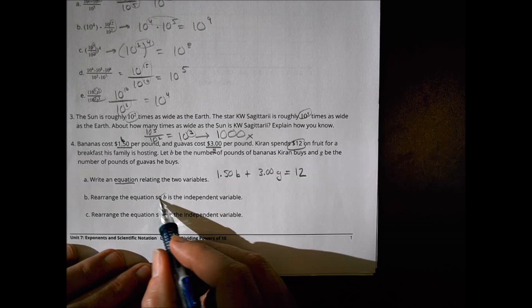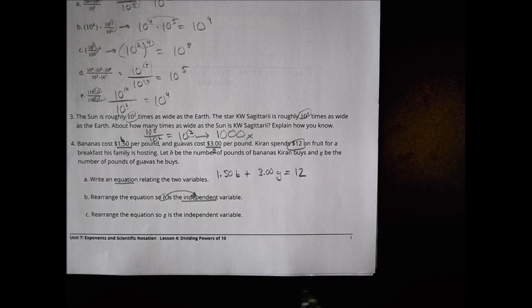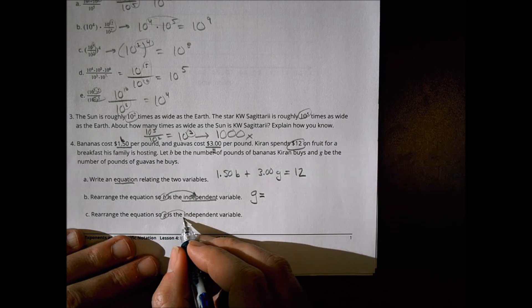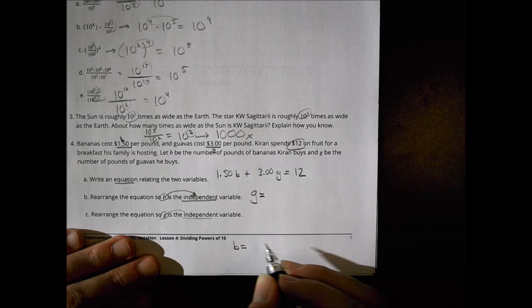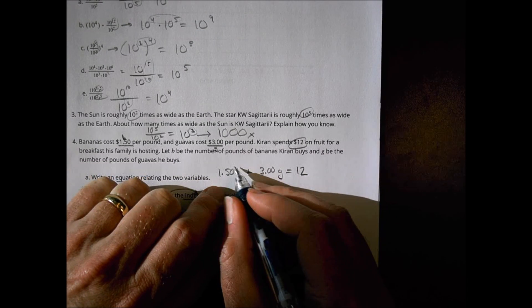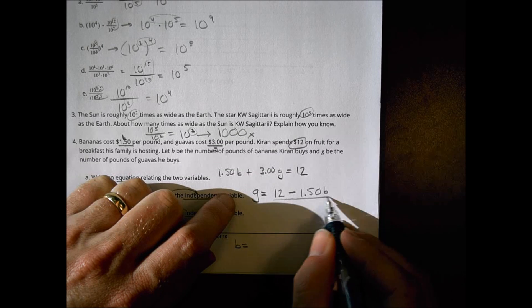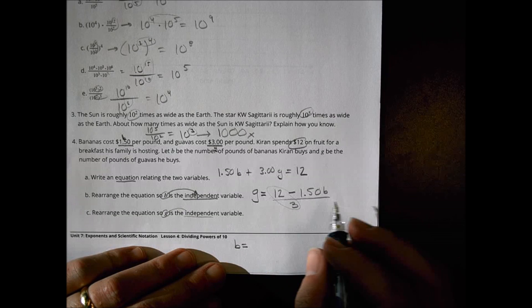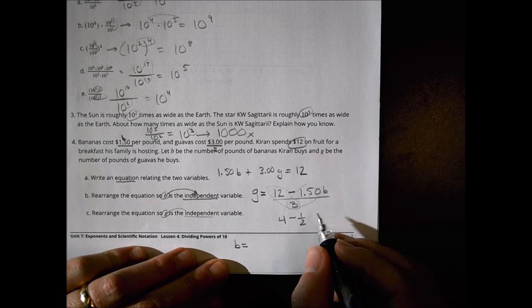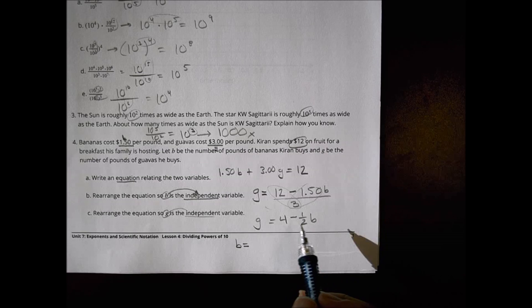Now I want to rearrange this so that B, first of all, is the independent variable. So if B is independent, that means nothing's going to change it, right? It stays what it is. That makes G the dependent. So we're going to make G our dependent here. And over here, G is the independent. So we're going to make B our dependent here. So let's move this around and make this G on one side. So to do that, I have a twelve. I'm going to subtract this to put it over there. So I'm going to do minus one point five zero B. And I'm going to divide everything by three. If I divide everything by three, this becomes twelve divided by three is four. And then one point five divided by three is about a half. So I could rewrite this like that if I chose to. If you left it like this, it's not wrong. That's fine. But you could simplify it a little bit more.